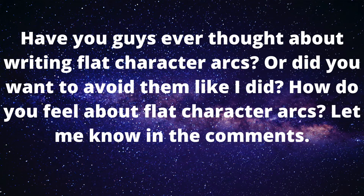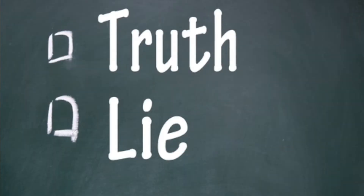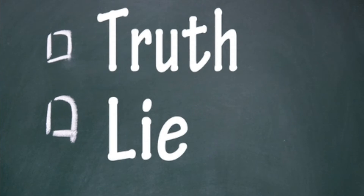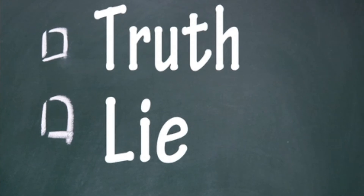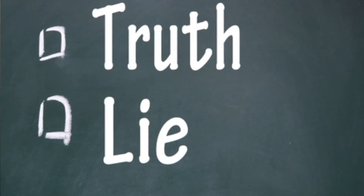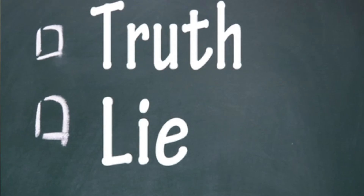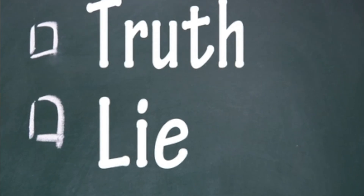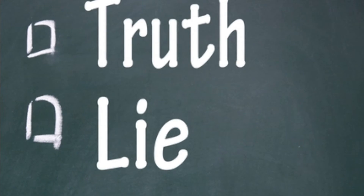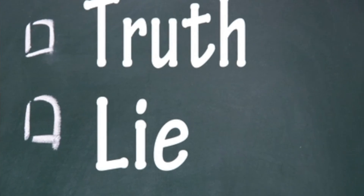Have you guys ever thought about writing flat character arcs, or did you want to avoid them like I did? How do you feel about character arcs? Let me know in the comments below. If your character knows the truth, then the secondary characters are the ones that represent the lie — they are the ones living in the lie. How are their lives influenced by the lie? How does it contrast with the main character's life? What conflicts can occur with the opposition of beliefs? The world around your character also lives in the lie — how does it compare to the character's truth, and what is your character up against?